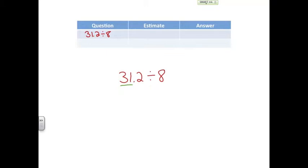That is the number that we want to estimate to. So here we want to estimate 31 to 32, since 32 is the closest multiple of 8. So we rewrite the problem as 32 divided by 8, and then our answer is 4.